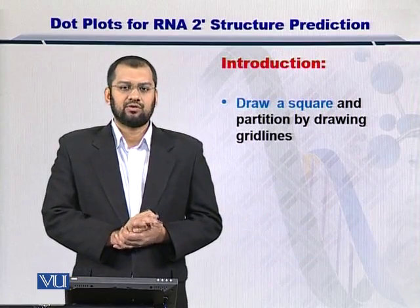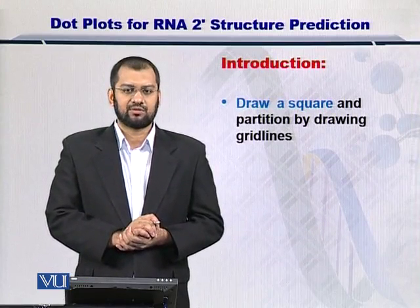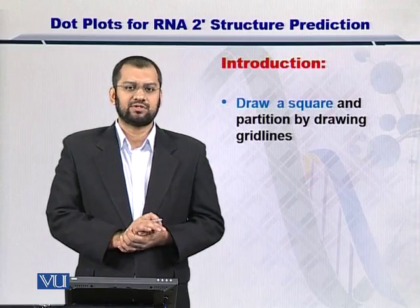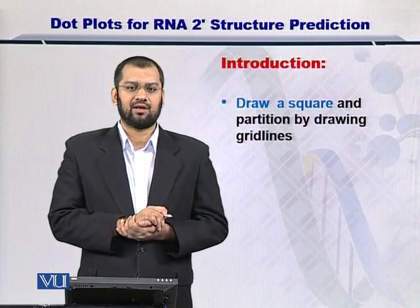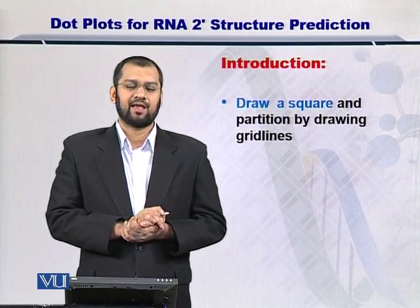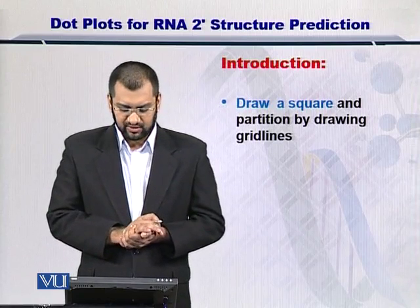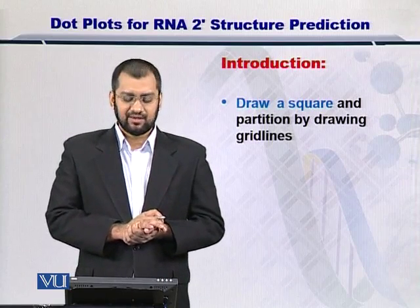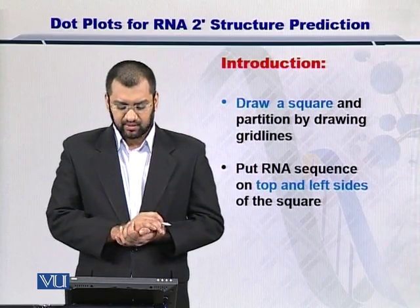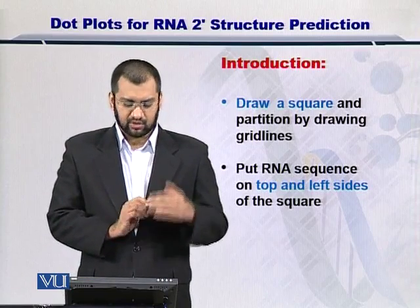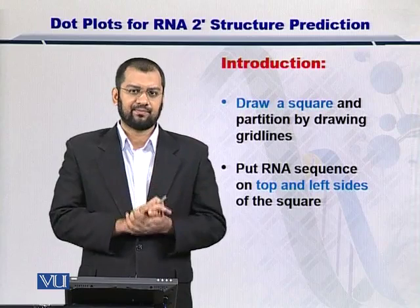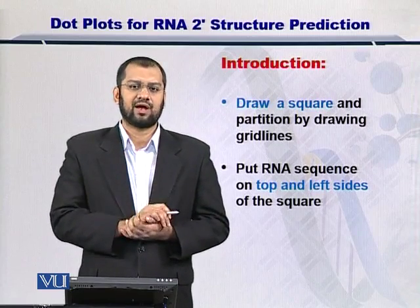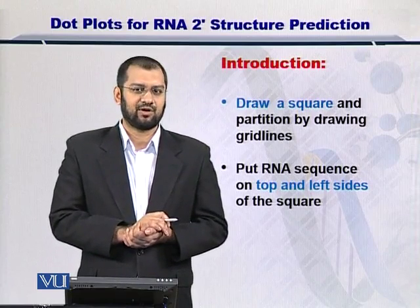The strategy to undertake this task is the dot plot. To make a dot plot, you need to have the primary structure of the RNA molecule, that is the sequence. Then you draw a square and partition it by drawing grid lines. You put the RNA sequence on top and on the left side of your square, and then you connect each complementary nucleotide with a dot. That is why it is called a dot plot.